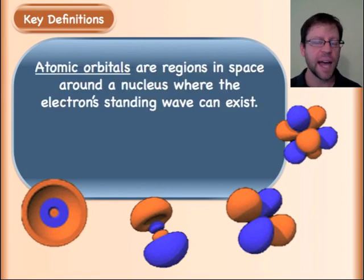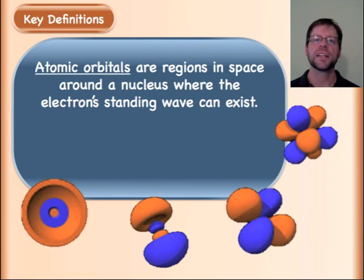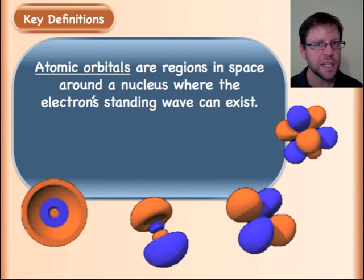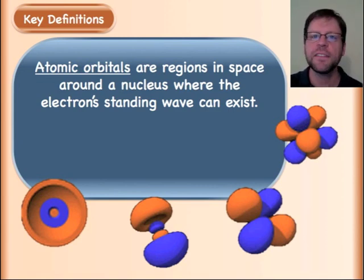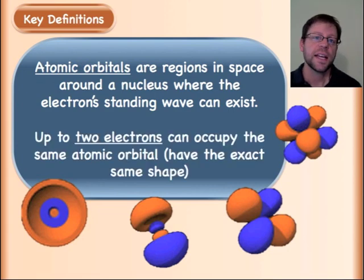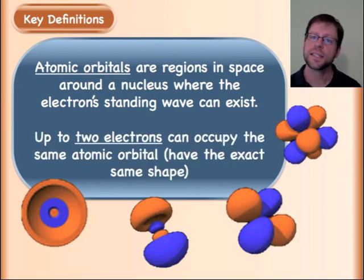I'm going to define atomic orbitals: they are regions in space around a nucleus where you can find electrons, sitting there, behaving like waves. It is good to know that up to two electrons can actually exist in the same atomic orbital — they actually exist in the same space and have the same wave behavior.